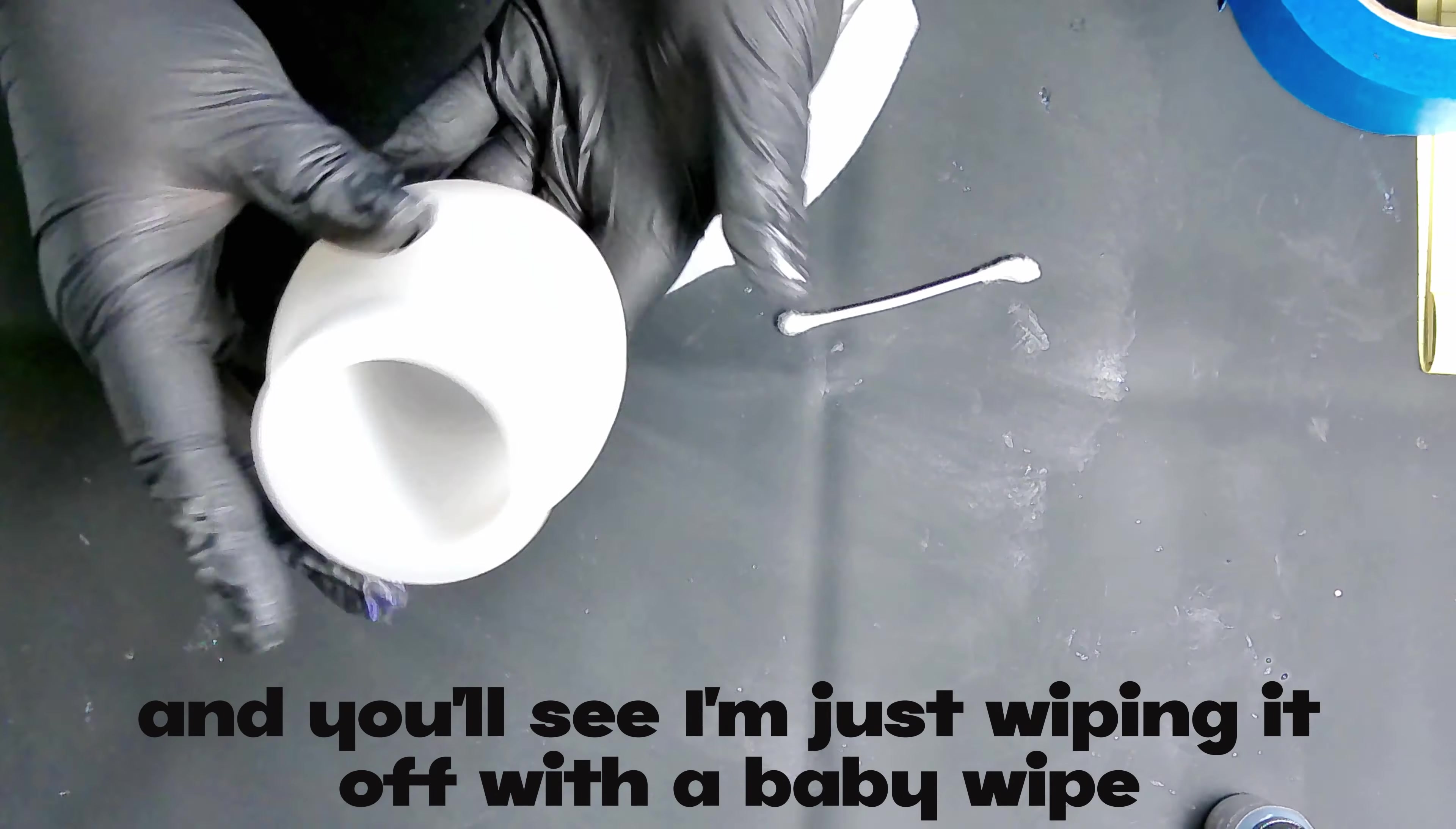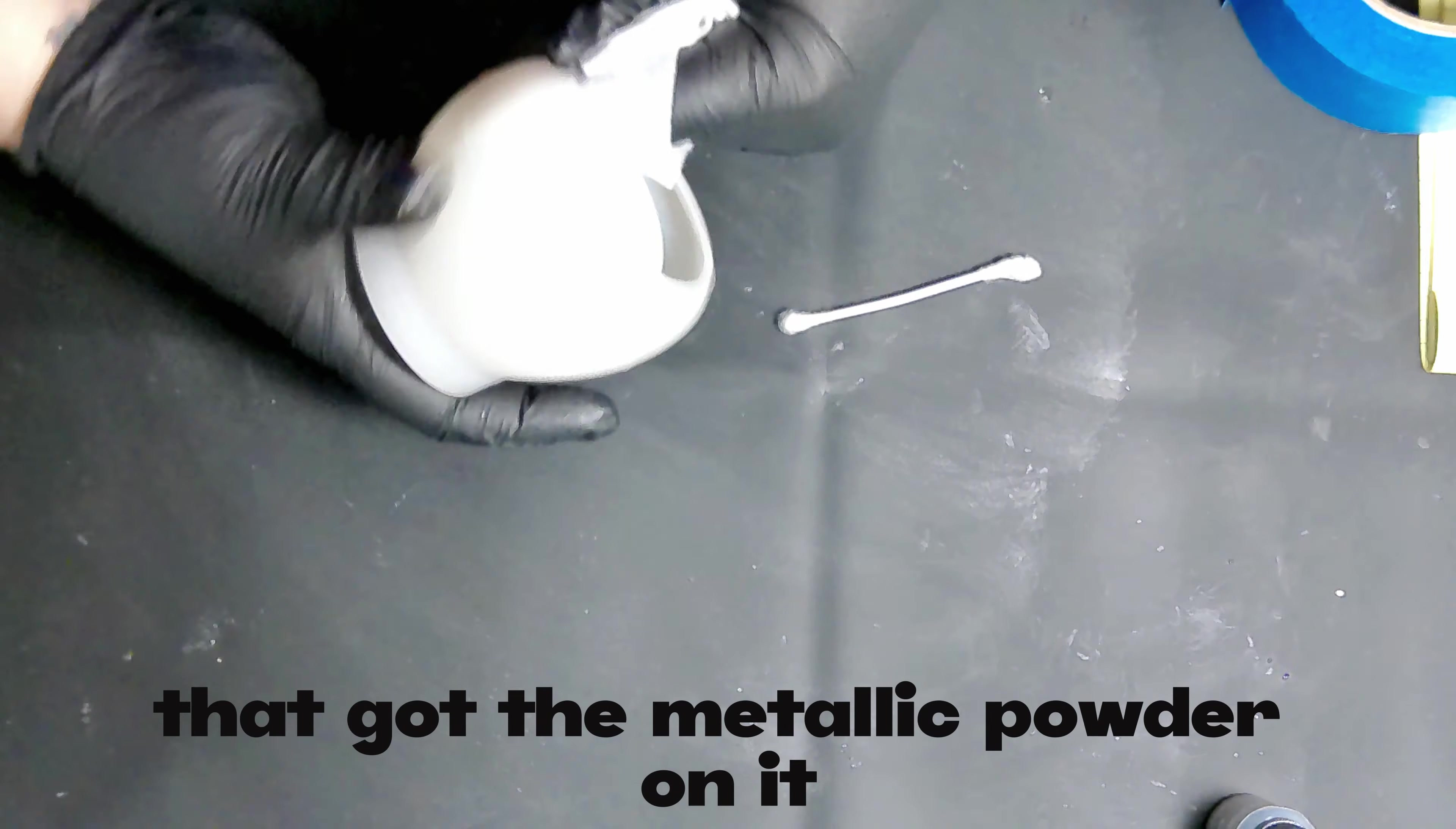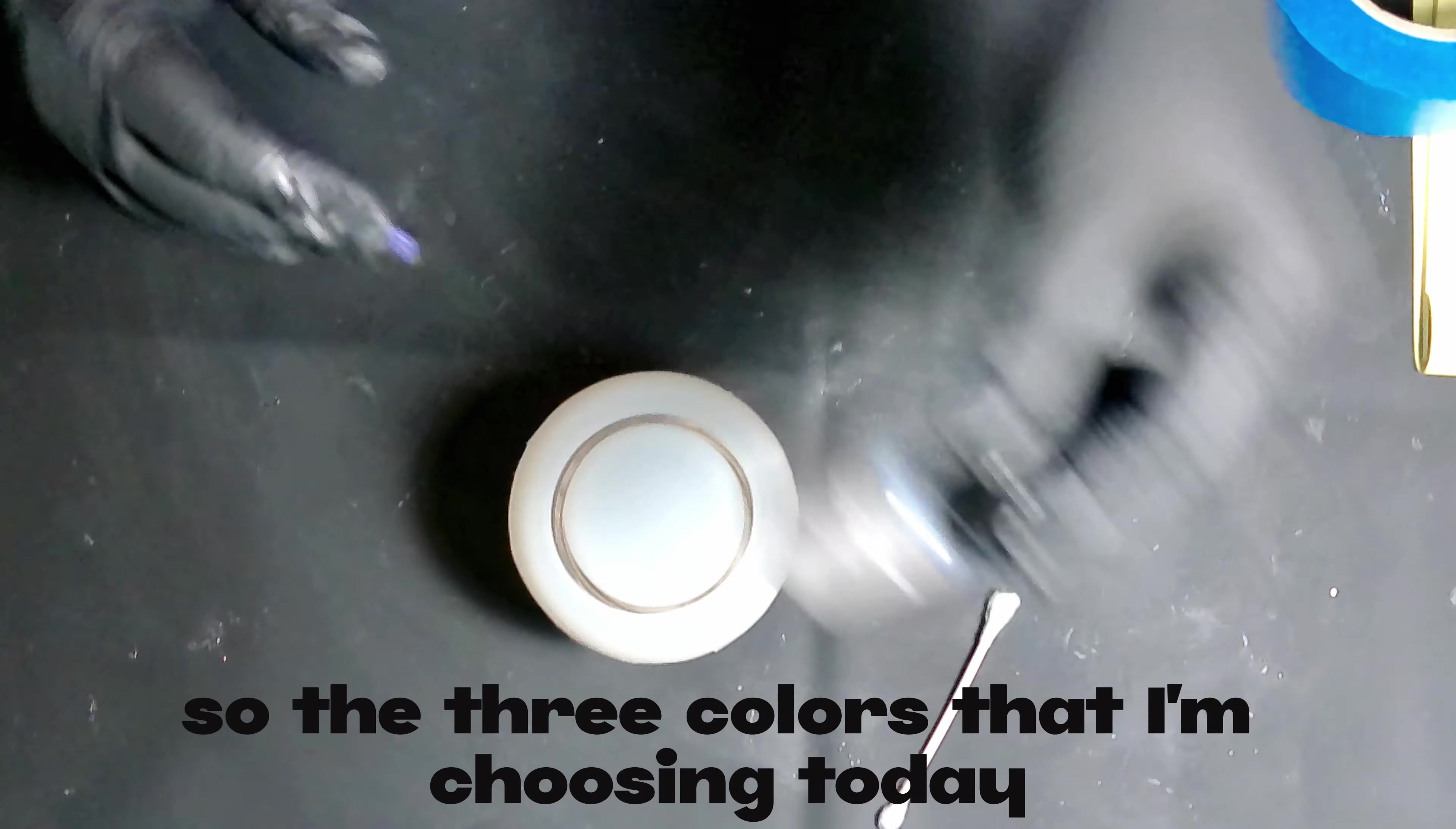And you'll see I'm just wiping it off with a baby wipe, and then I'm looking around to make sure that I got all the spots. There, I didn't, so I'm going to go and clean up those little areas that got the metallic powder on it. And once it's all nice and clean, it is resin time.